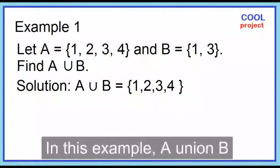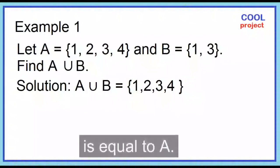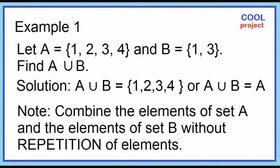In this example, A union B is just equal to A. Note: to find A union B, combine the elements of set A and the elements of set B without repetition of elements.